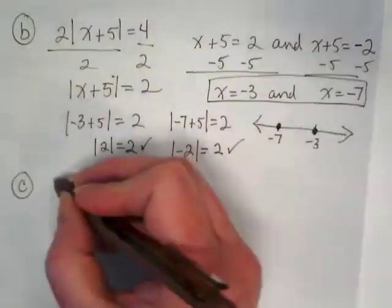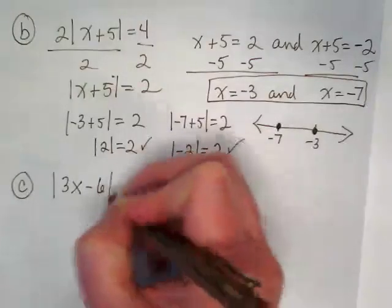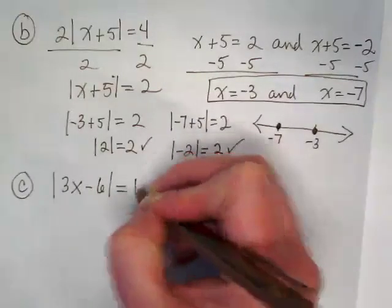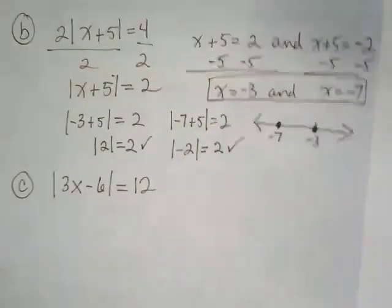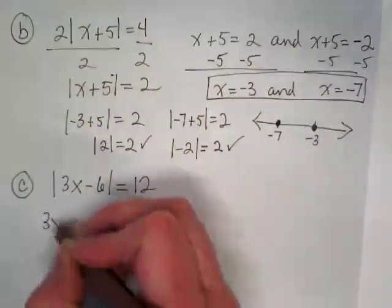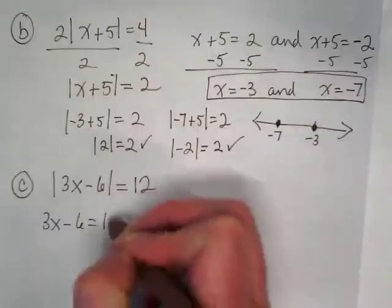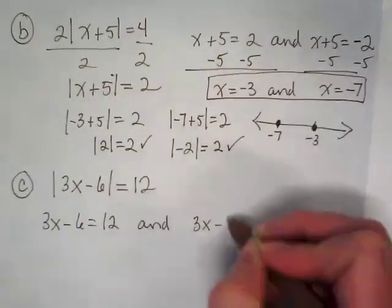And C. Absolute value of 3X minus 6 is equal to 12. What do I do since the absolute value is already isolated? I'm going to rewrite it without the absolute value. One version equal to the positive, and the other equal to a negative.